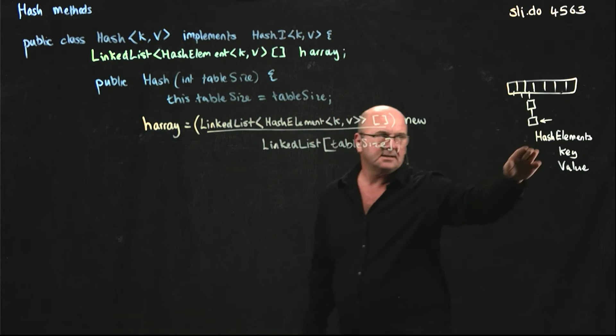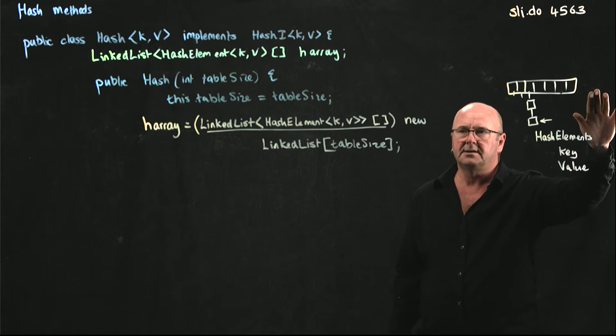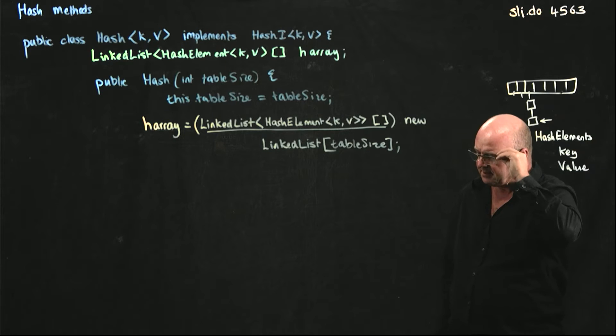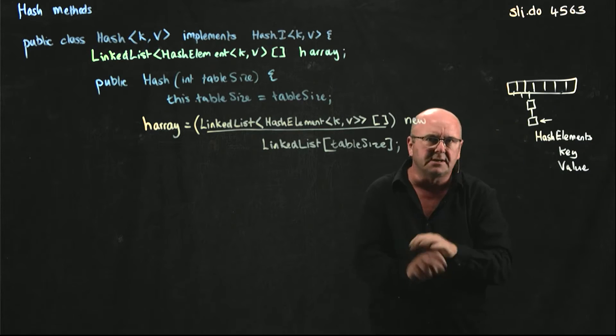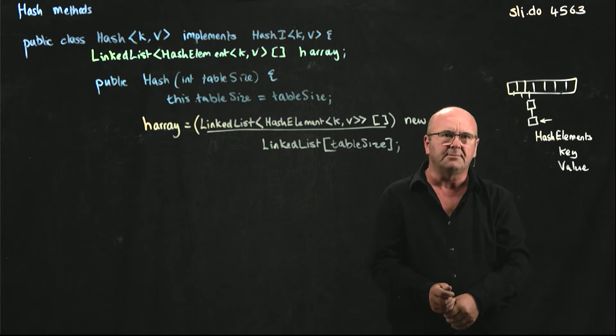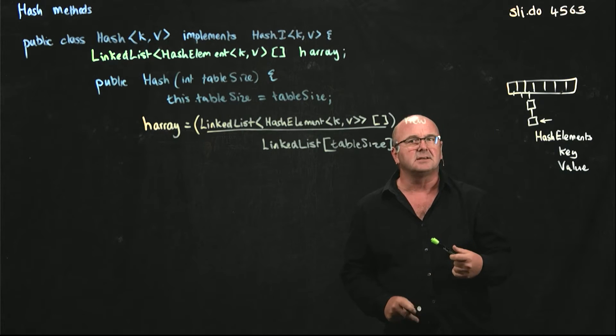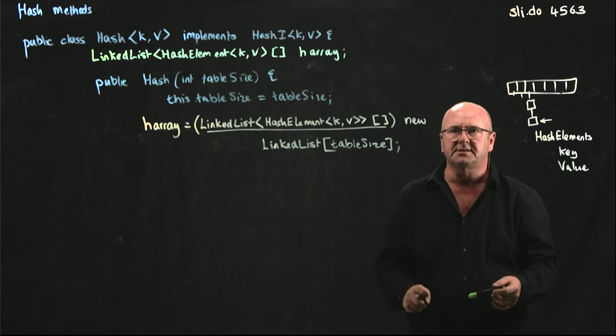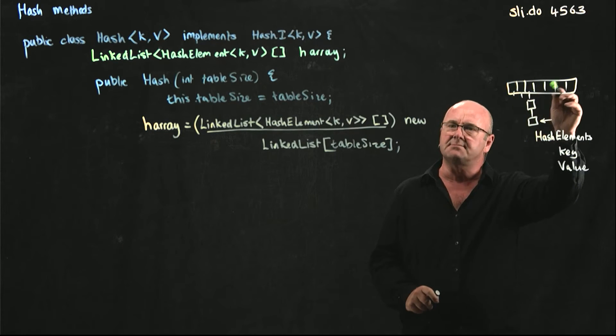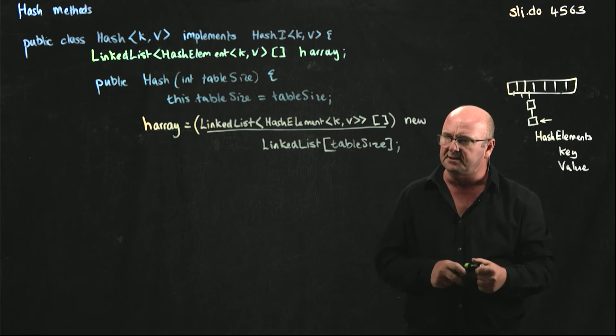So now we've created our array of linked lists. So we could be done, but the problem is that at the moment our array actually is empty, right? Every position in our array is empty.